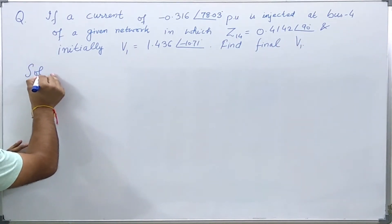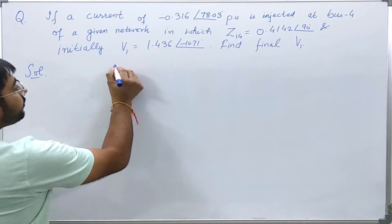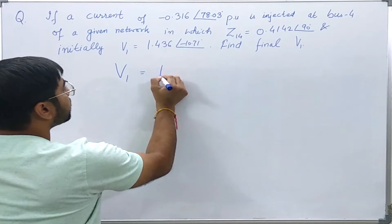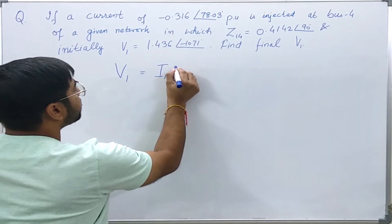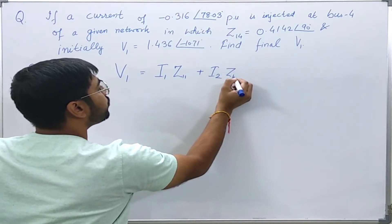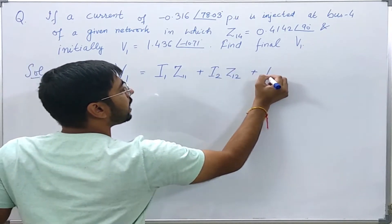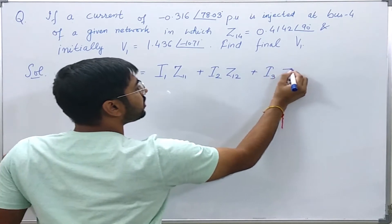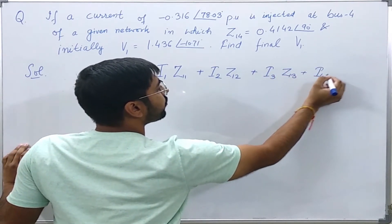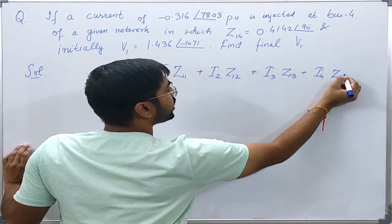To solve, what we will do is write the expression of V1. It is I1 Z11 plus I2 Z12 plus I3 Z13 plus I4 Z14.